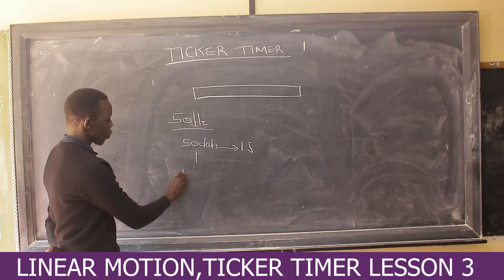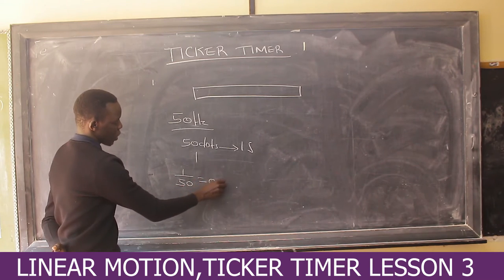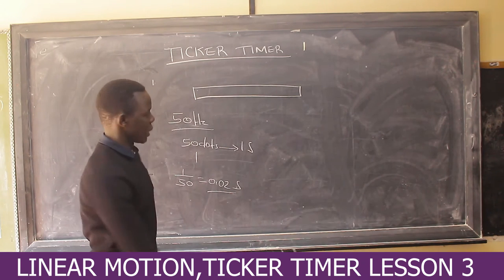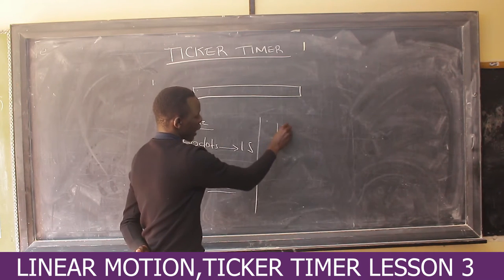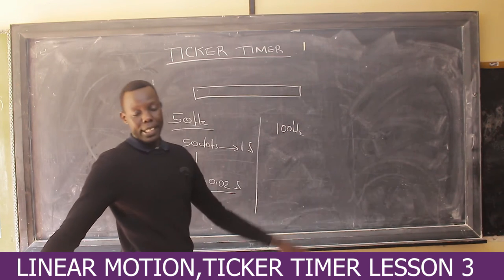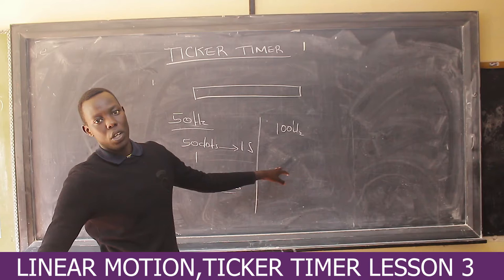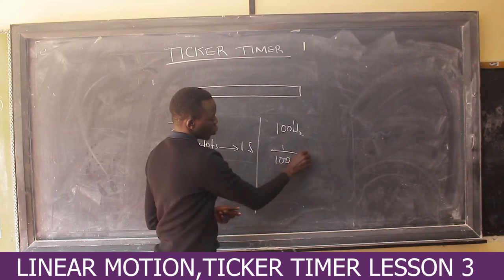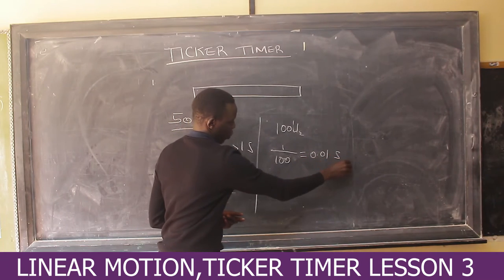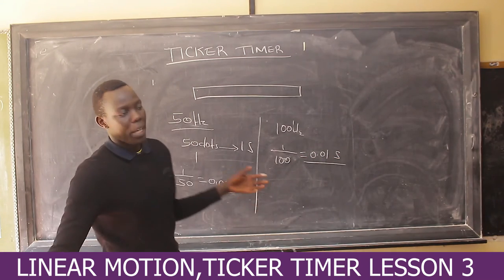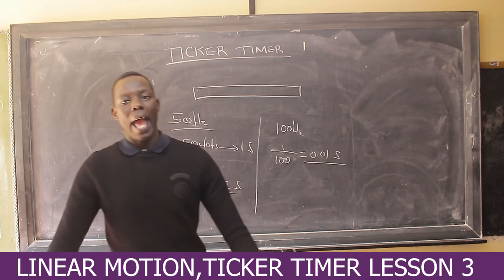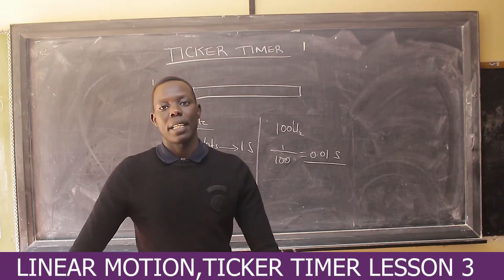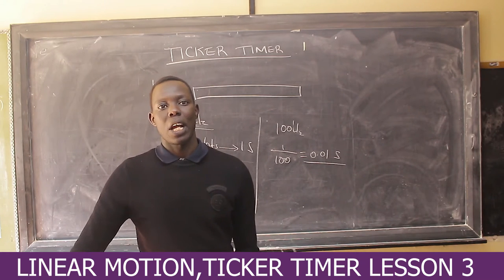If you can make 50 dots in one second, then one dot is made in 1 over 50, which equals 0.02 seconds. For a ticker timer of 100 Hz frequency, it makes 100 dots per second, so one dot takes 1 over 100, which is 0.01 seconds. These frequencies are very important — everyone who wants to find acceleration using a ticker timer must know the frequency of their timer.